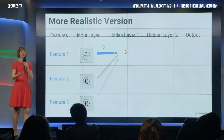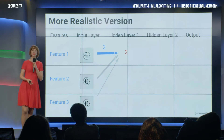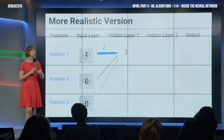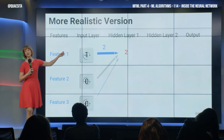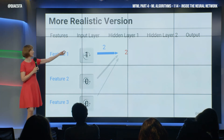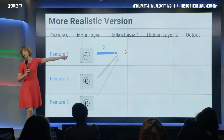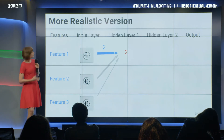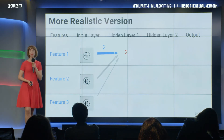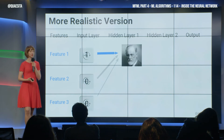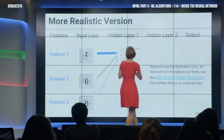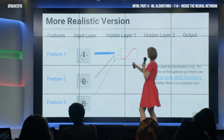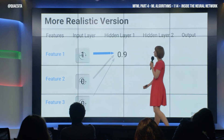We send the result through an activation function to add some non-linearity, so that we won't just be able to collapse all the weighted sums down into a single simple weighted sum. Let's use one we're comfortable and familiar with — sigmoid. We'll use a sigmoid activation function. We find the two, put it in, and we get 0.9.